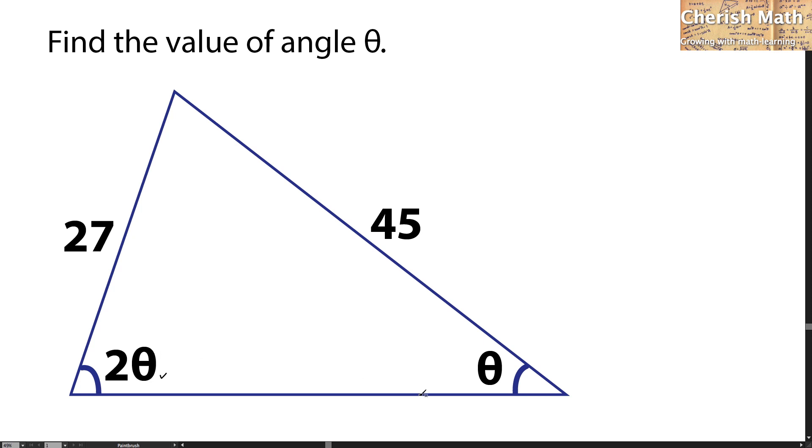I'm going to use the sine rule to solve this problem. 2 theta is opposite the side of 45 units, so I can use sine 2 theta over 45 equals sine theta over 27, since this angle theta is opposite the 27 units.